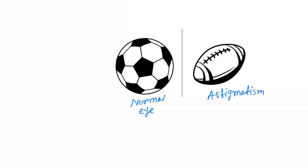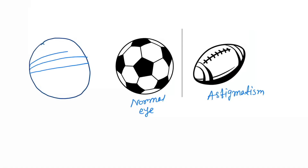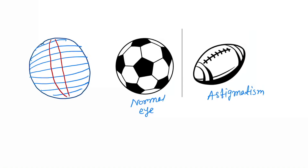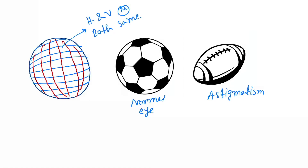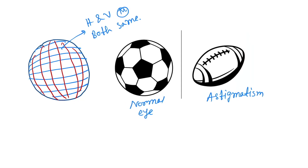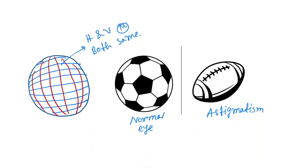In a normal eye, think of it as a sphere. It has a horizontal meridian and a vertical meridian, and both have the same curvature. But in the case of astigmatism, let's draw a rugby ball to illustrate the difference.